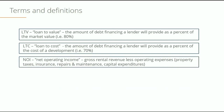NOI stands for Net Operating Income. This is a very important metric in real estate rental properties and in development. To calculate the net operating income, you take the gross rental revenue, then you deduct your operating expenses, which include property taxes, insurance, repairs and maintenance, as well as capital expenditures. What's left at the end is your net operating income.